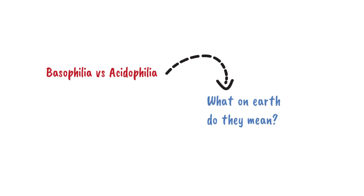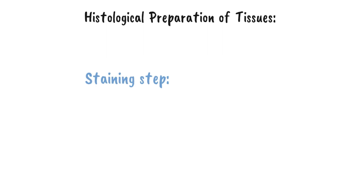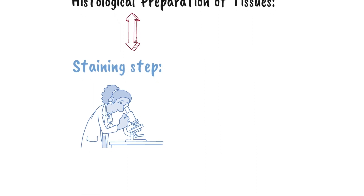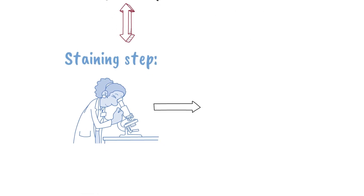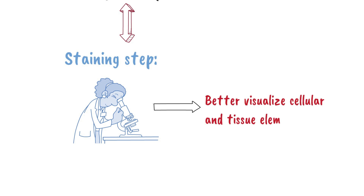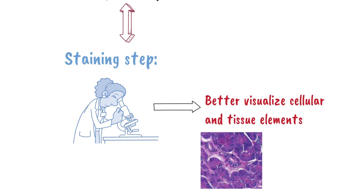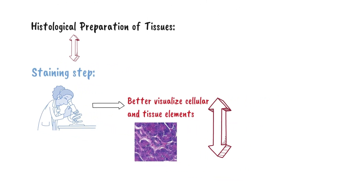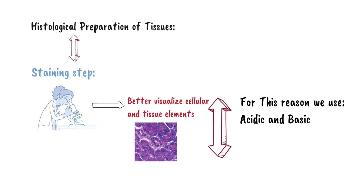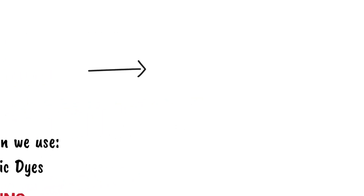Welcome everyone. What we are going to speak about today is the concept of basophilia and acidophilia — what on earth do these terms reflect? In histology, you will most definitely come across these terms: acidophilic or basophilic structures. In histological preparation of tissues, there is a staining step where we stain components of tissues to better visualize elements, because without staining it would be difficult to identify relevant cell types and features. We usually use acidic and basic dyes to stain tissue components, and from here these terms acidophilia and basophilia come.